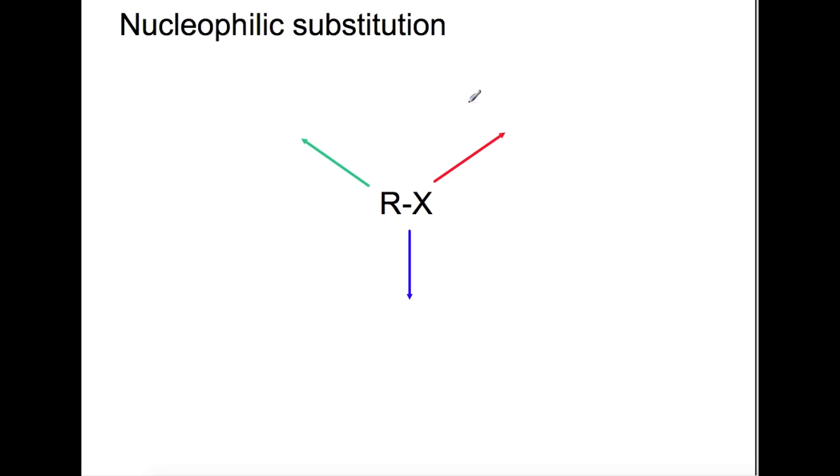Haloalkanes are useful synthetically as they allow you to produce lots of different molecules. The reason that you can carry out a nucleophilic substitution on a haloalkane is because of the C-X bond. This bond is slightly polar as the electrons are pulled slightly more towards the halogen. This leaves your carbon as an electrophile which can be attacked by a nucleophile.